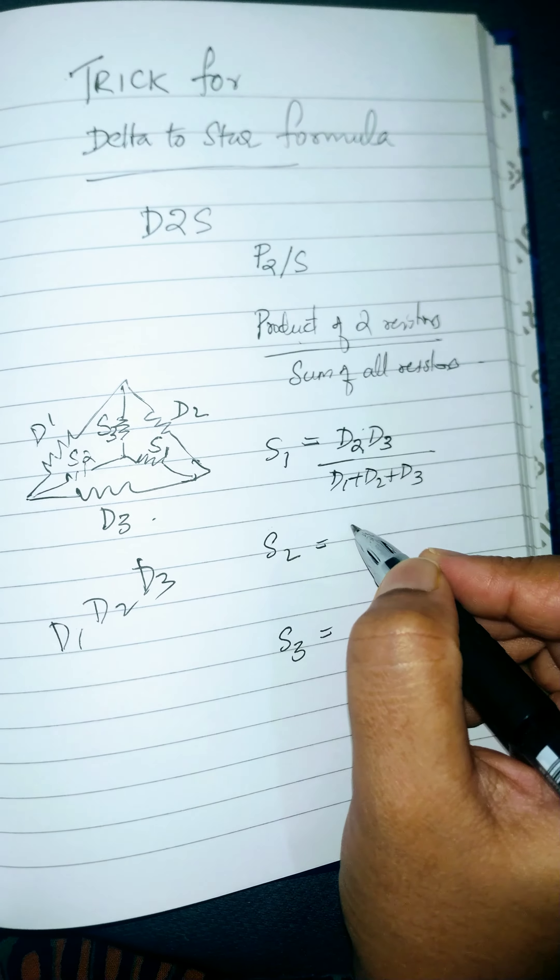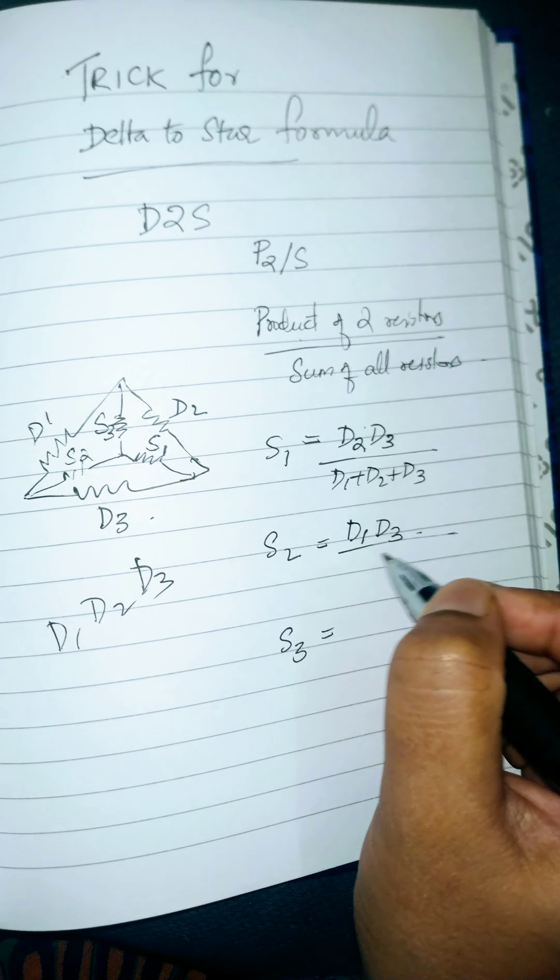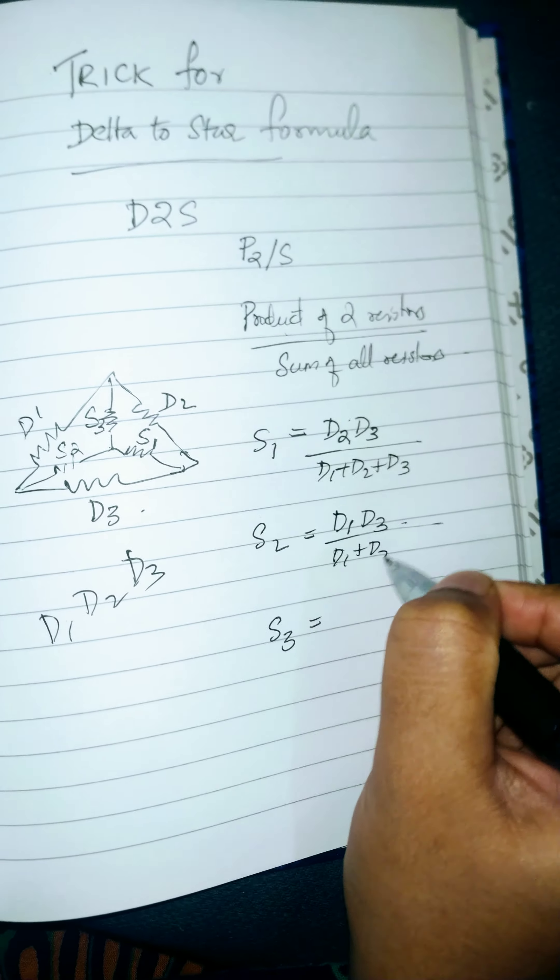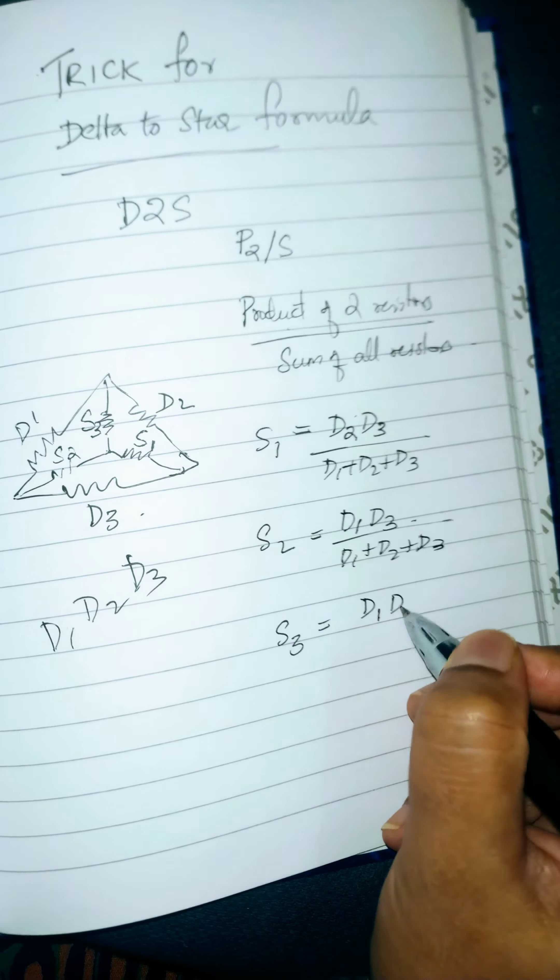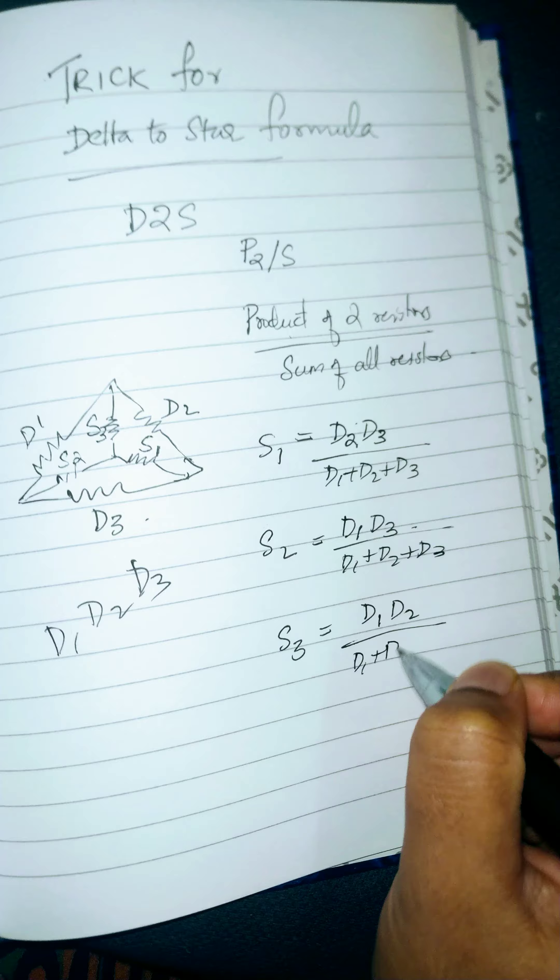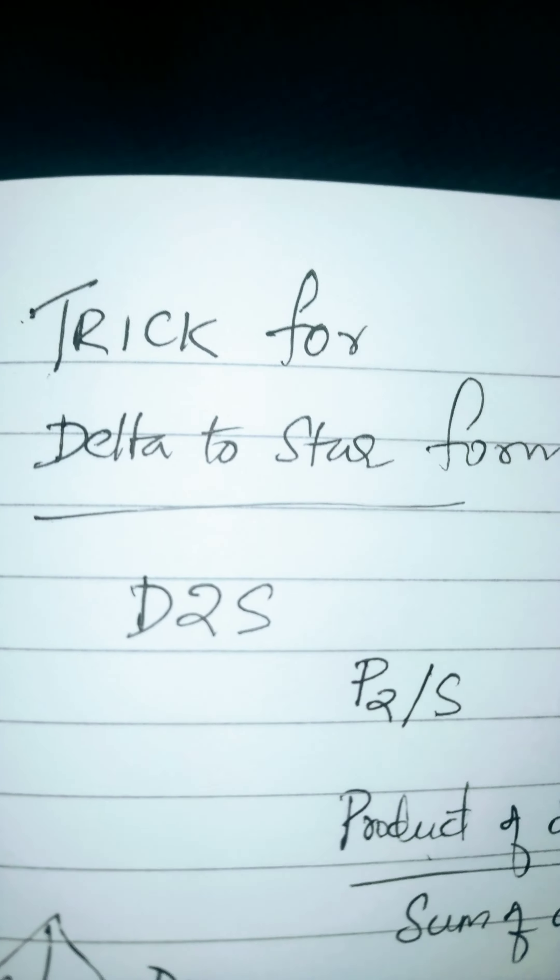Similarly, S2 is equal to D1 and D3, just look at the subscripts - D1 plus D2 plus D3. And finally you have S3 is equal to D1, D2 divided by sum of all resistors. So that's easy to memorize delta to star formula.